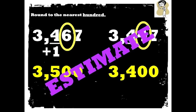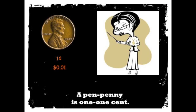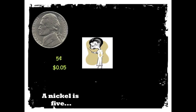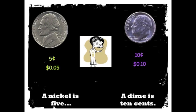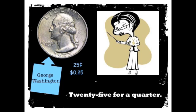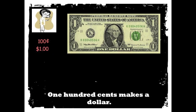A penny is one cent, a nickel is five, a dime is ten cents. Twenty-five for a quarter, George Washington. Hundred cents makes a dollar, there he goes again.